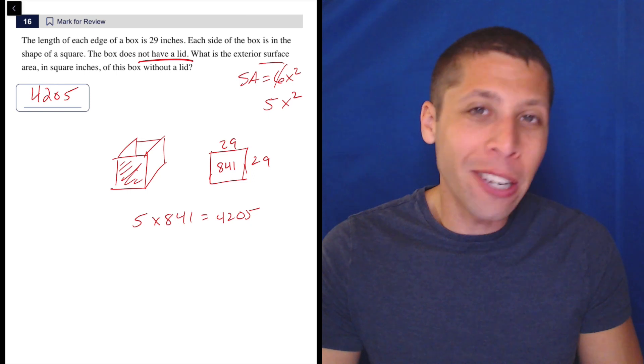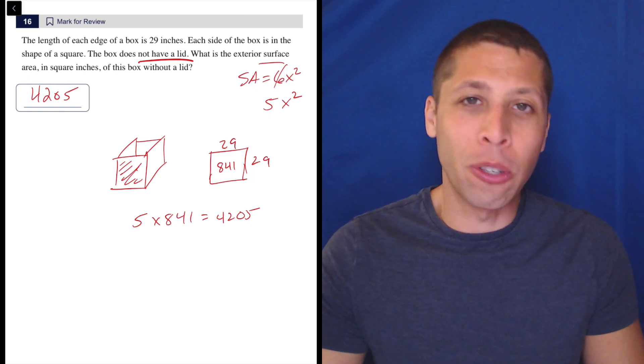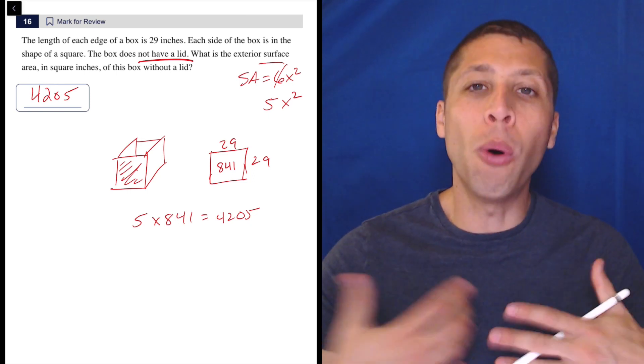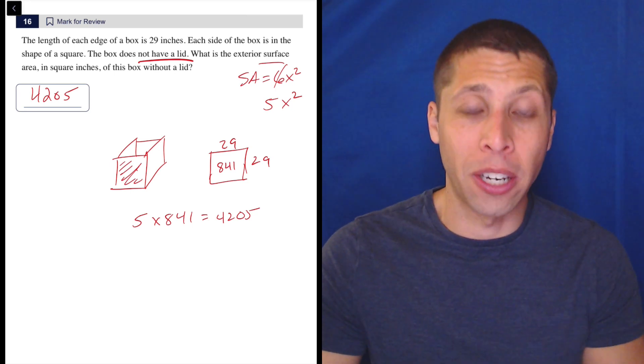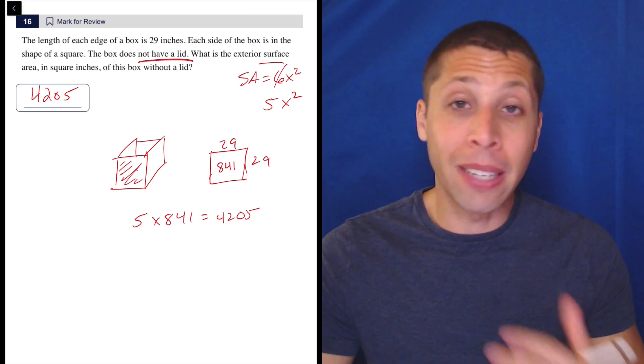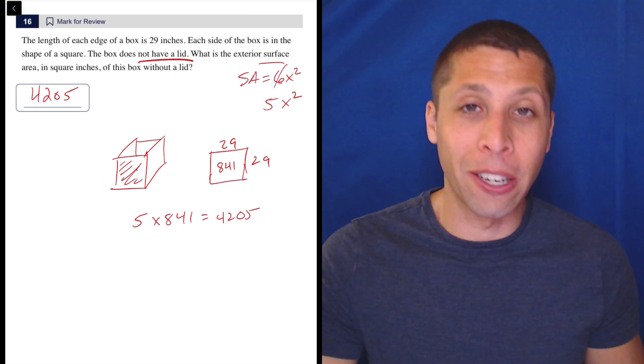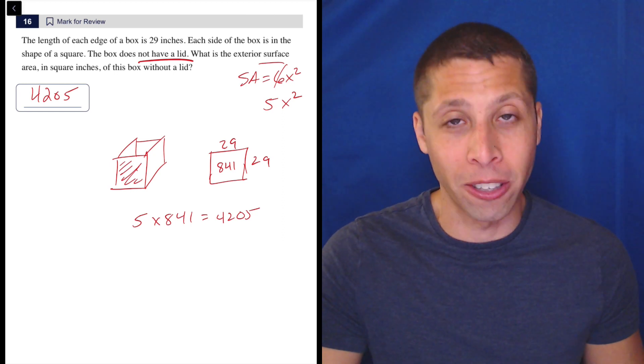But I know how this SAT is going to work. They're going to give you situations where it's even more twisted, even more off of the original formula. So just understanding the concept of surface area is safer. But there you go. If you did get it wrong because you used the 6x squared formula, please let me know in the comments. I am curious if I called it for anybody.